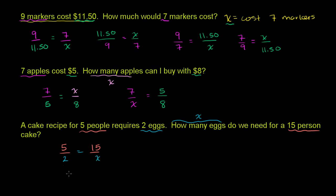Or you could flip both sides of this. You could say the ratio between five and 15 is going to be equal to the ratio between the number of eggs for five people and the number of eggs for 15 people. And obviously you could flip both sides of this equation. So we've essentially set up the proportions that describe each of these problems, and then you can go later and solve for x to actually get the answer.